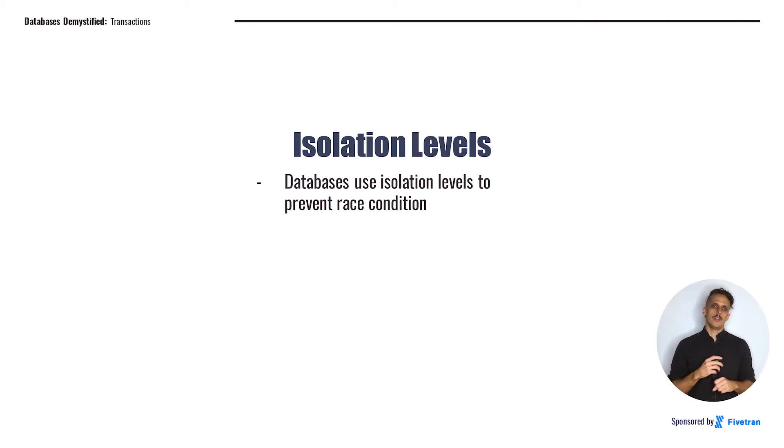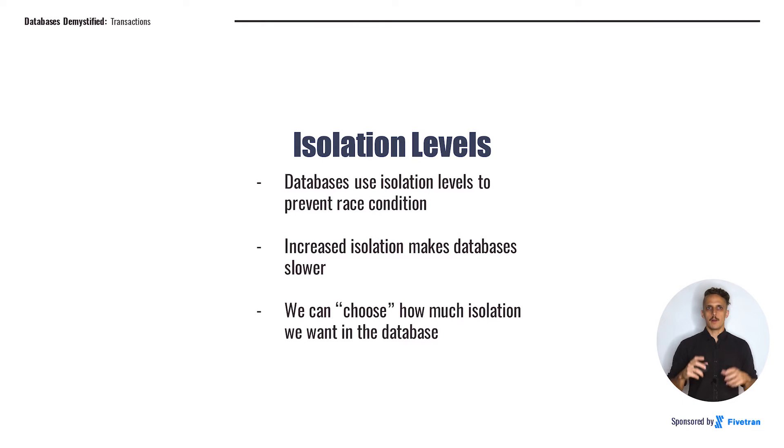But, like all good things in this world, this comes with a cost. Increased isolation makes databases slower. Interestingly, in many databases, especially transactional databases, we can choose how much isolation we want between our concurrent transactions. The key thing to know is that different isolation levels exist, and it's important to know what they are at high levels, so that when you're reading the documentation or marketing material about a database, you understand what types of bugs you might encounter as the database is processing those transactions.